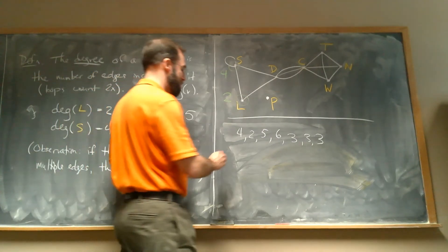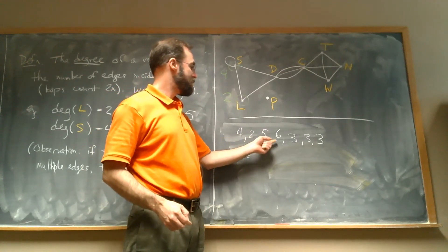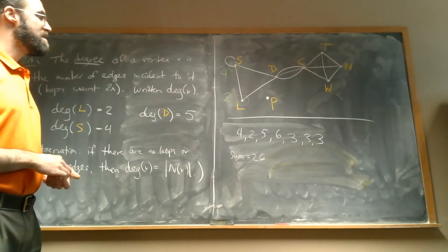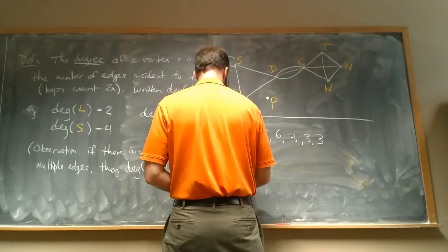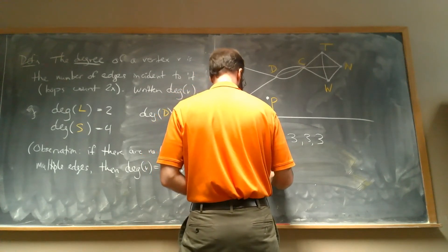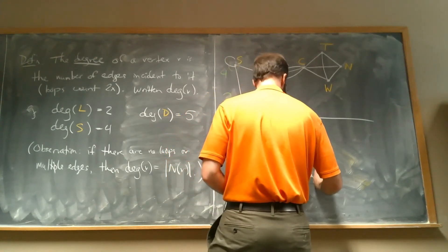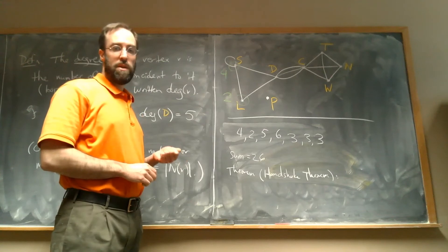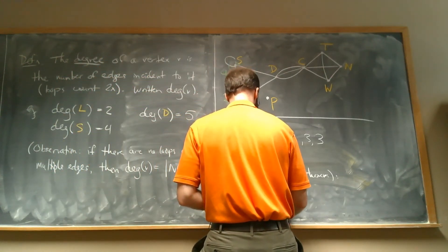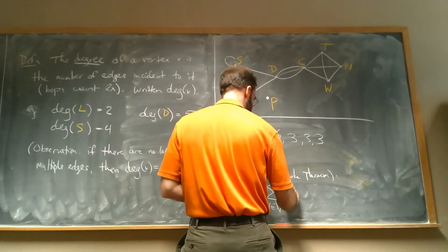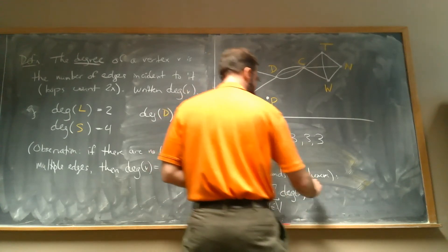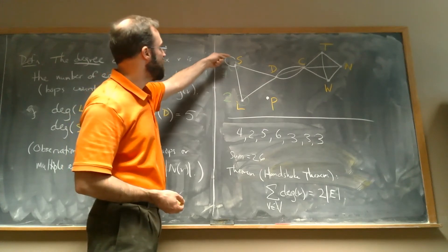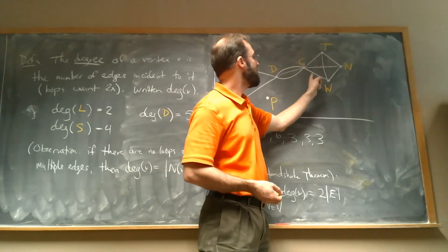If we add those degrees up, we get 6, 11, 17, 26. And the theorem — called the handshake theorem — says that if we add up all the degrees, we get twice the number of edges: the sum over all vertices V of deg(V) equals 2 times the number of edges. We can verify: counting the edges in this graph gives 13, and 2×13 = 26. It works.